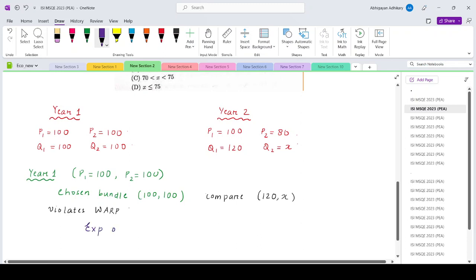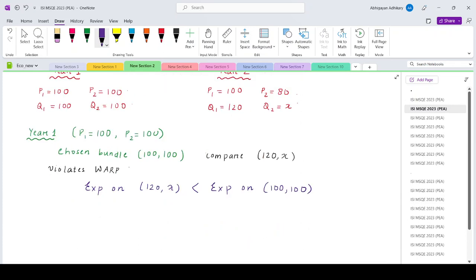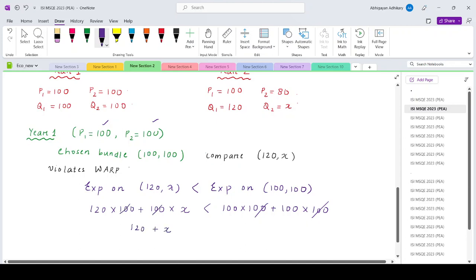When the expenditure on this bundle 120, x which has not been chosen is actually lesser than the expenditure on the bundle which has been chosen. That means the bundle 120, x was affordable but the consumer chose 100, 100. So expenditure on 120, x bundle would be, prices are 100, 100. So 120 into 100 plus 100 into x is less than 100 into 100 plus 100 into 100. So 100 can cancel off from all of them. So 120 plus x is less than 200. So this basically gives us x should be less than 80.